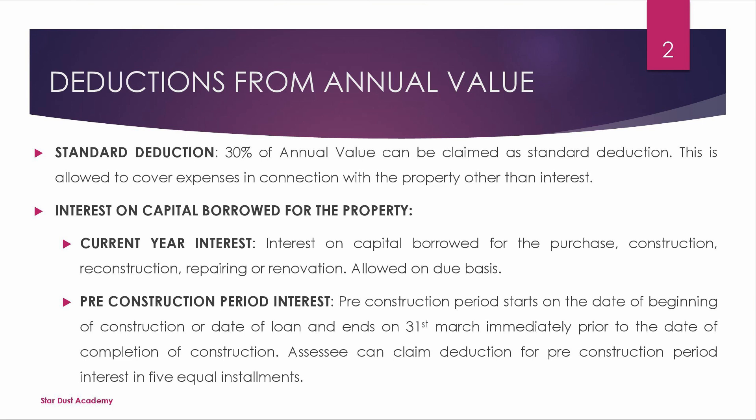Now we have deductions from the annual value. First is Standard Deduction. Standard Deduction is 30% — 30% of annual value can be claimed as Standard Deduction. This is allowed to cover expenses in connection with the property, other than interest.